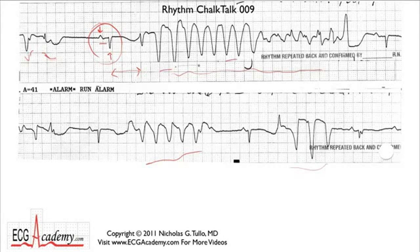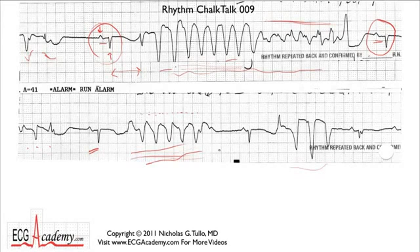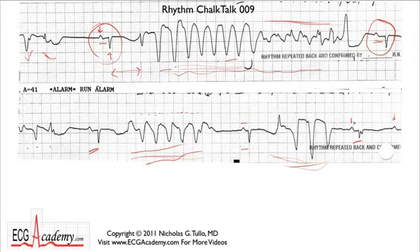Then it seems to change — you have these wide beats and then it changes its appearance with these funny crazy-looking beats, and then it finally stops and you get another normal beat. The PR is a little long there, but then you've got a couple of wide beats again, then a normal beat, then another run of wide complex tachycardia. Scanning around, you don't see anything that looks like a normal QRS peaking out for many of these beats, so let's assume it's not artifact.